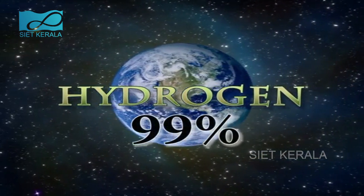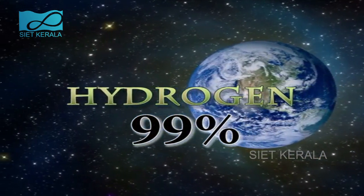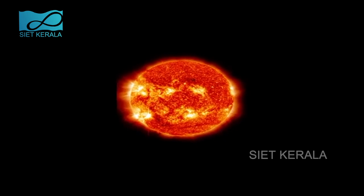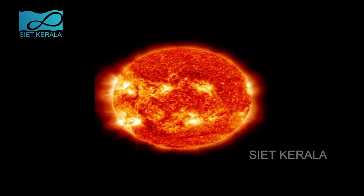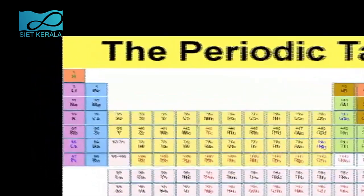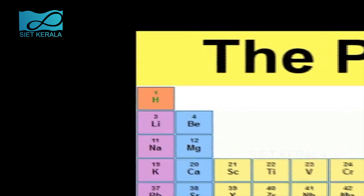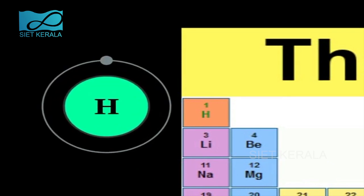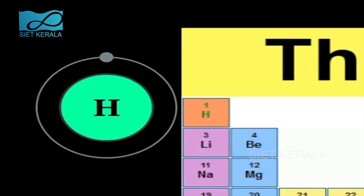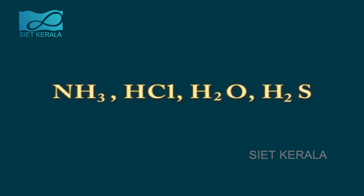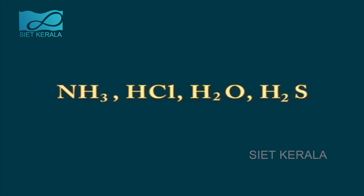99% of the universe is hydrogen. The main component of the sun and stars, as well as the source of stellar energy, is hydrogen. Hydrogen is given a specific position in the periodic table. Its atomic number is 1 and it is the smallest atom. Hydrogen occurs as free hydrogen and also in the form of compounds such as NH3, HCl, H2O and H2S.